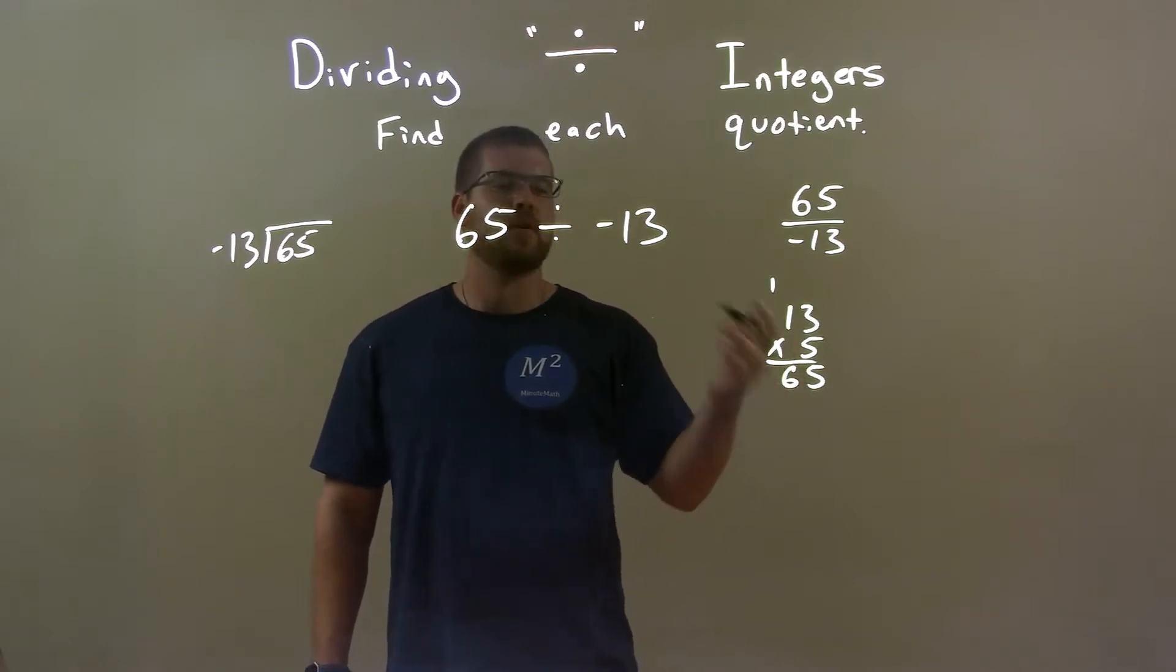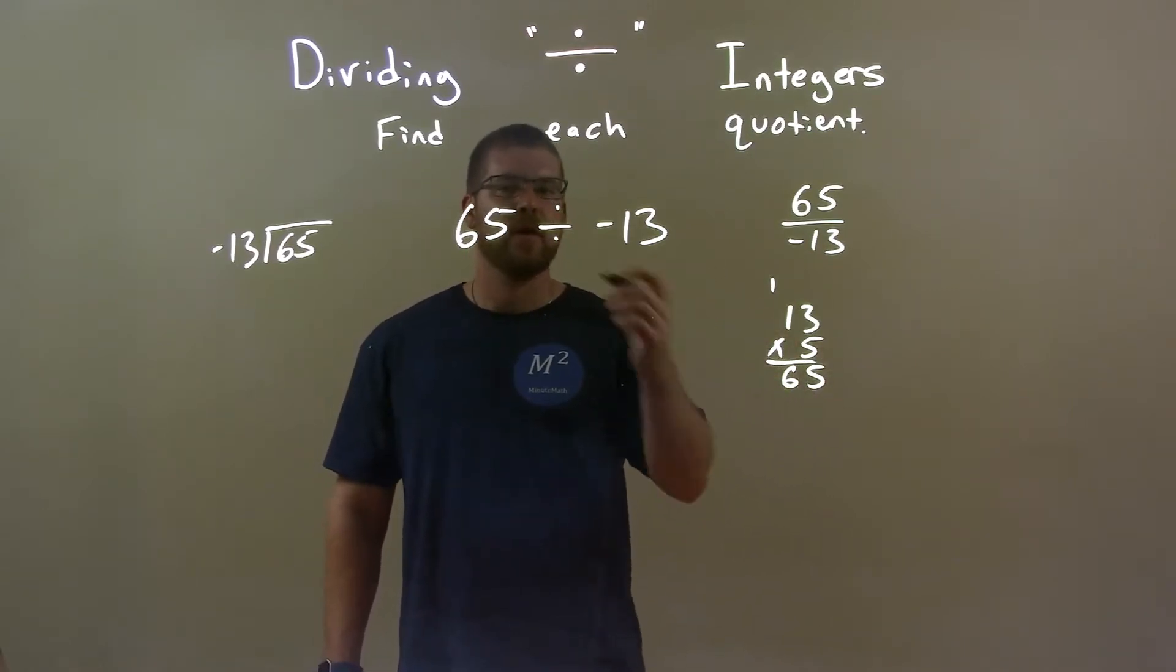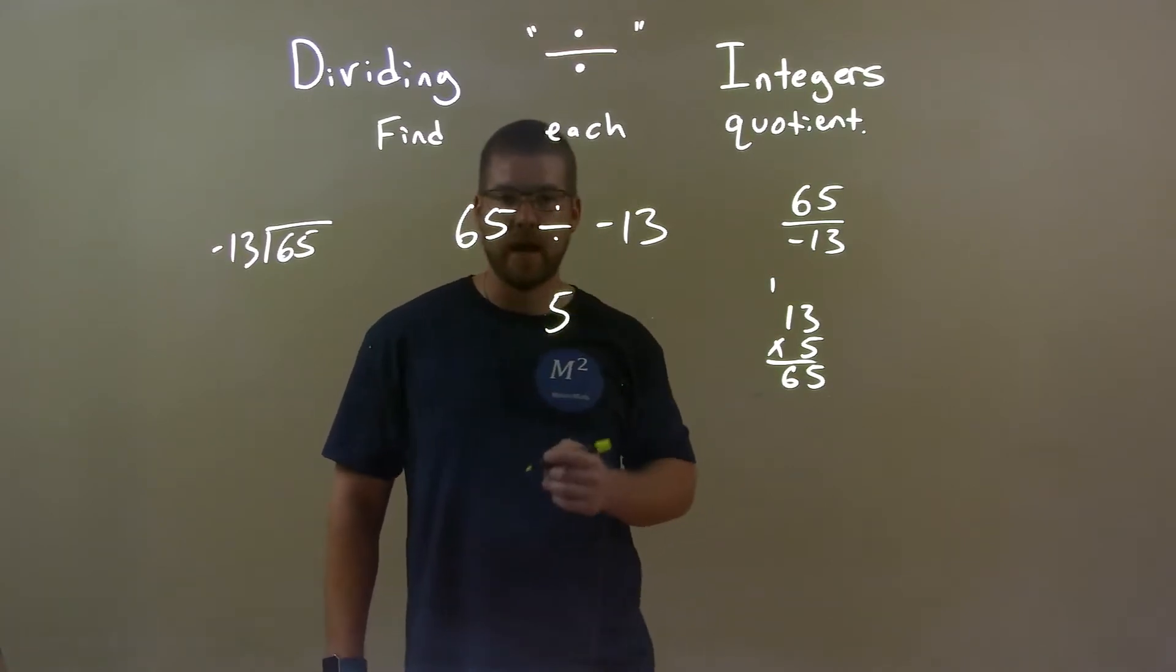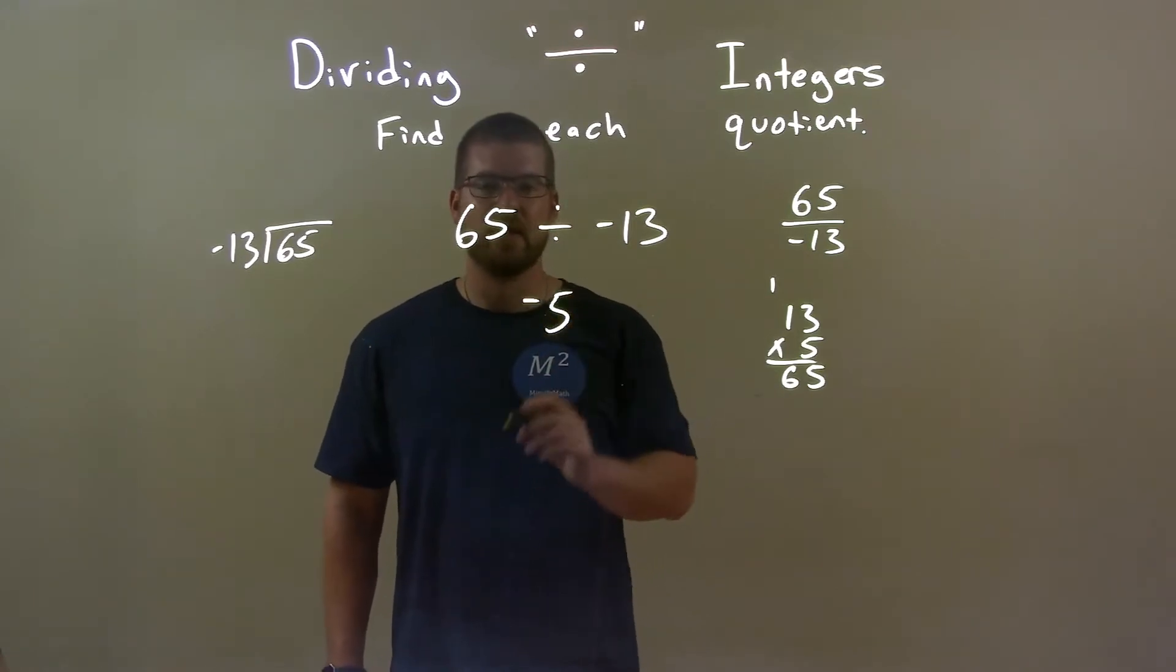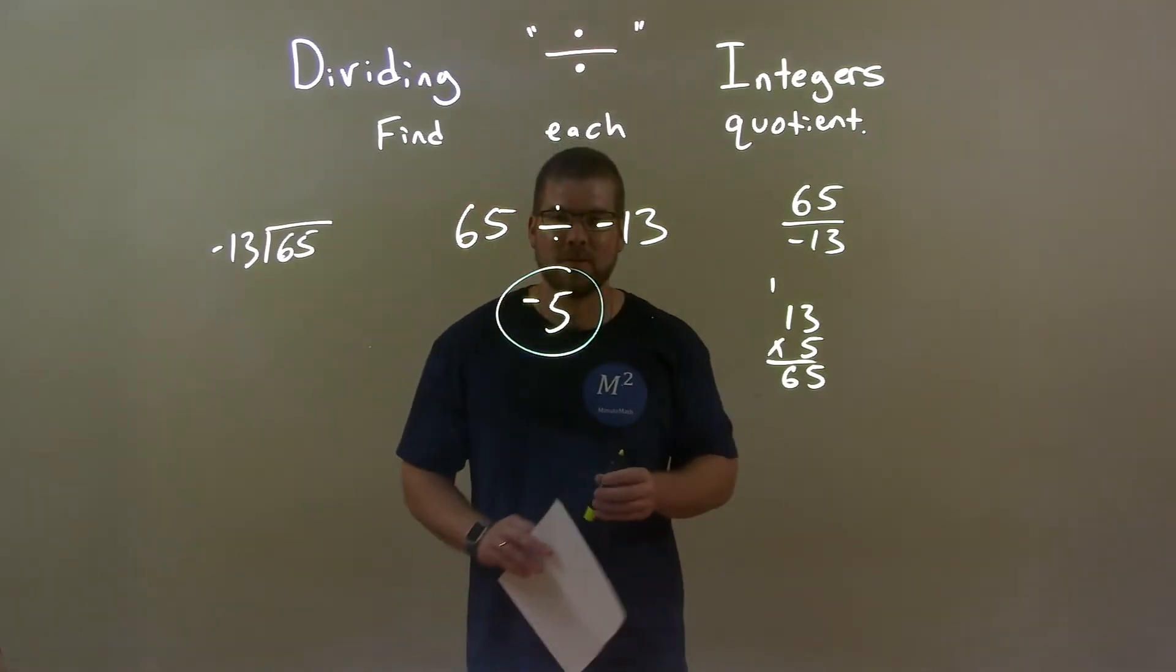So 5 is kind of the reverse answer of this multiplication. So 65 divided by 13 is just 5 but we see it's a negative. So a positive divided by a negative is a negative. So there's a negative 5 there. And so negative 5 is our final answer.